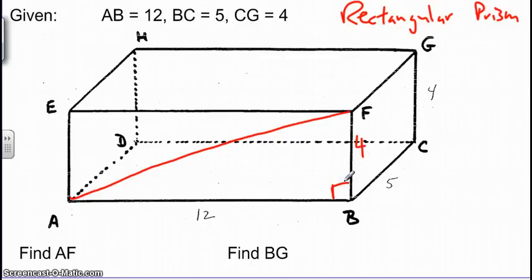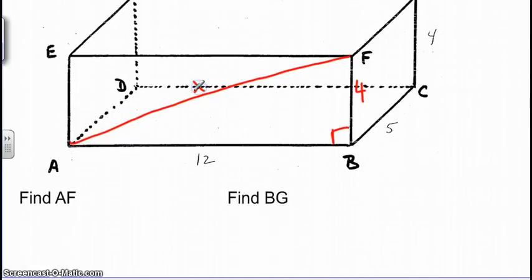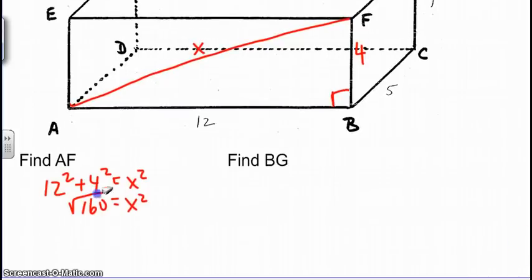Using Pythagorean theorem here to define AF, we would have 12 squared plus 4 squared equals x squared. So 144 plus 16 would give us 160. Square root that. Square root both sides. And we know that's 16 times 10, which we would reduce to 4 square root 10 for our diagonal AF.